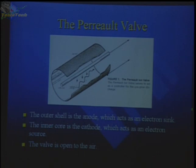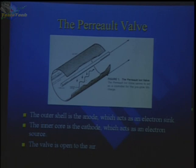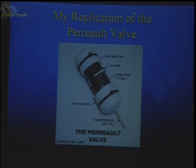This is a picture of the Perrault valve. It's an open-air valve. He uses a cylindrical anode with a rod — that could be a tungsten rod — as the cathode. Bruce developed a plasma theory behind what was going on in his device. This provided me an opportunity to do some experiments, maybe trying to replicate some of his work.